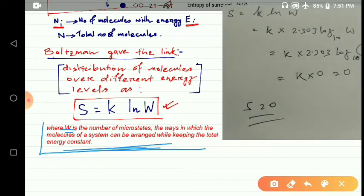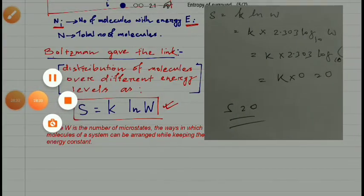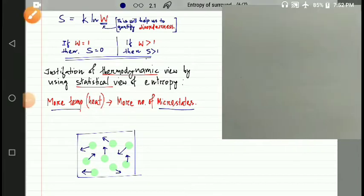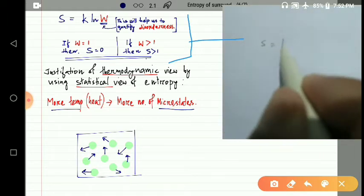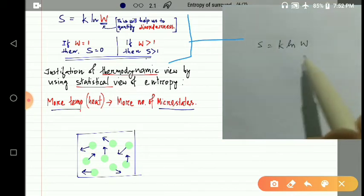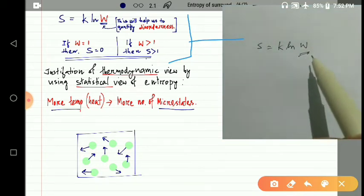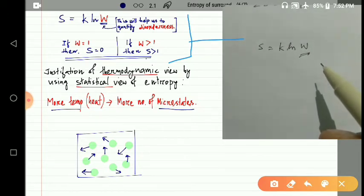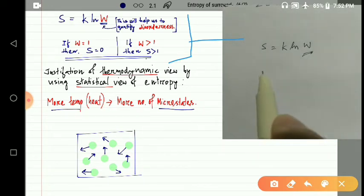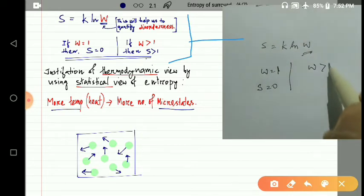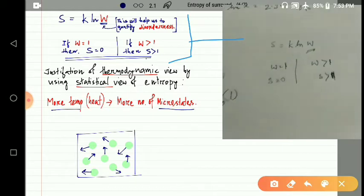The equation S = k ln W helps us to quantify disorderness. If W = 1, then S = 0, which we have already calculated. If W is greater than 1, then S is also greater than zero, meaning disorderness is present. If we can arrange the molecules in many ways, then disorderness exists and entropy is positive.